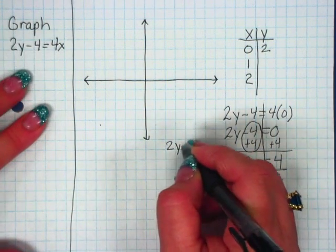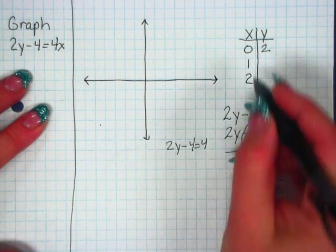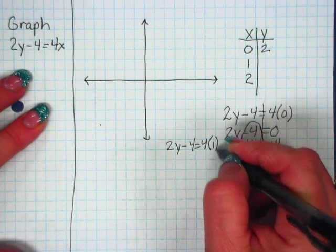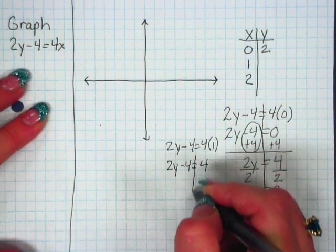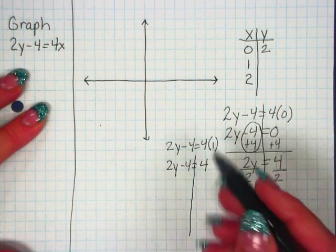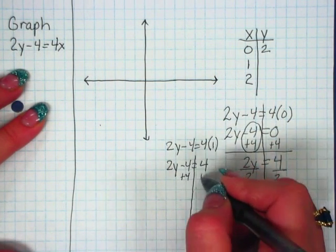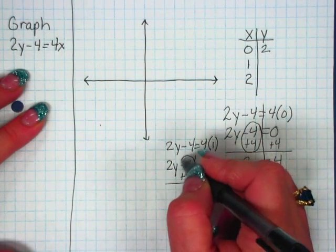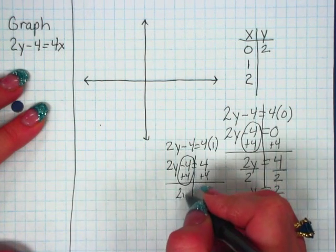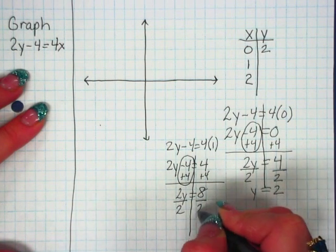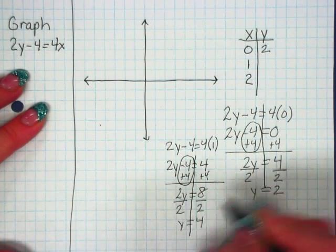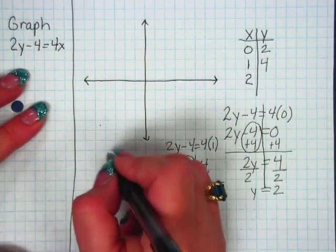We do that equation again, and this time we make the x 1. 2y minus 4 equals 4. And now we have our mirror. Add 4 to both sides. This gives us that 0. 2y equals 8. Opposite operations. Divide. y equals 4.